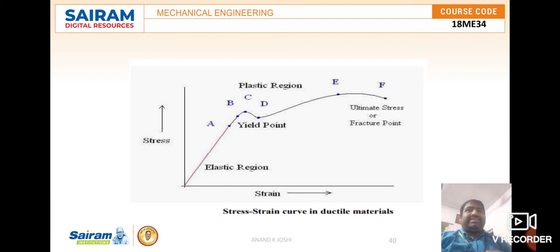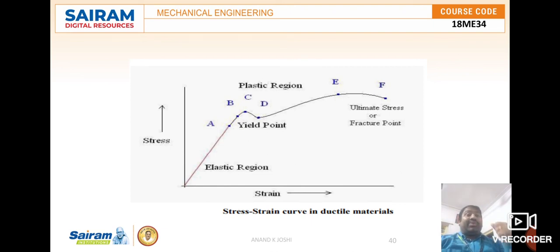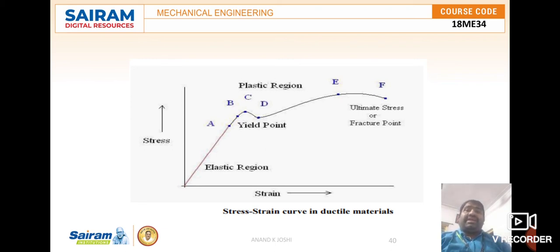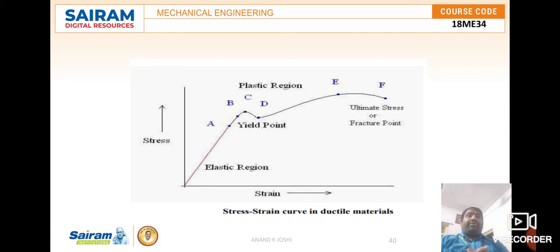Next is resilience, which can be described as strain energy — the ability of the material to absorb energy when loaded within the elastic limit. All these properties are within the elastic limit. Resilience is expressed in terms of sigma squared divided by two times Young's modulus. Knowing the modulus of resilience is very important for understanding the elastic limit of a material.